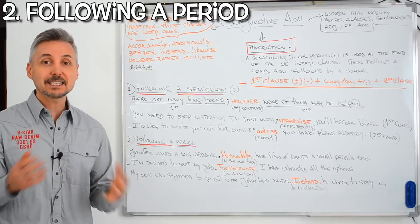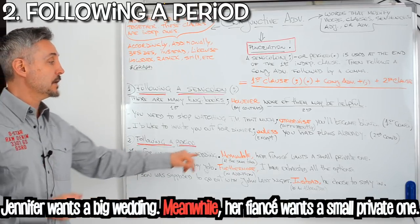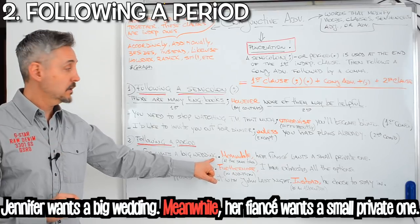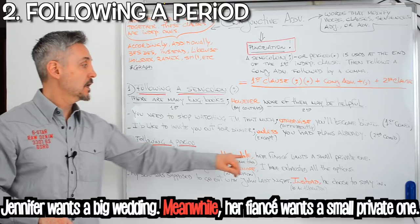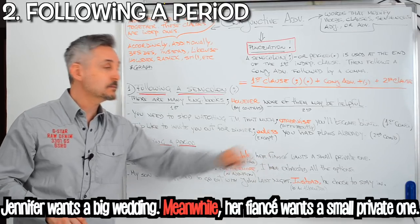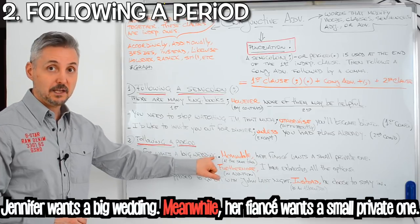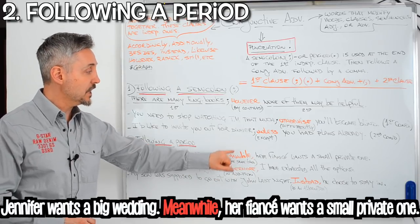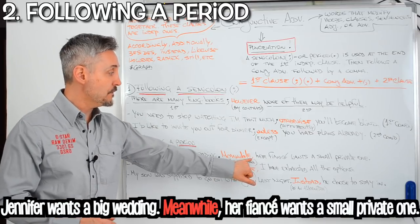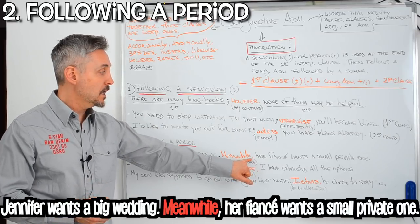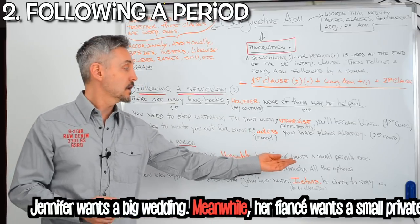For our next group, let's list the ones that follow a period. 'Jennifer wants a big wedding. Meanwhile, her fiancé wants a small private one.' 'Meanwhile' means 'at the same time'. So 'Jennifer wants a big wedding' is the first clause, then the conjunctive adverb 'meanwhile' followed by a comma, and 'her fiancé wants a small private one' is the second clause.